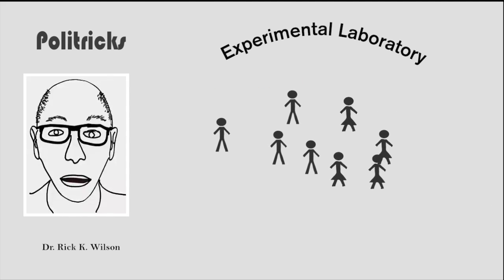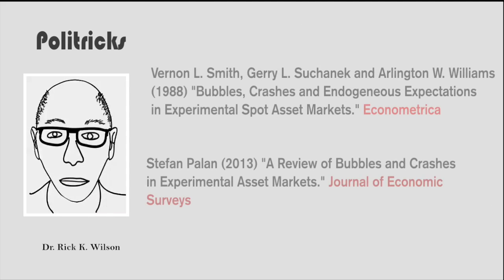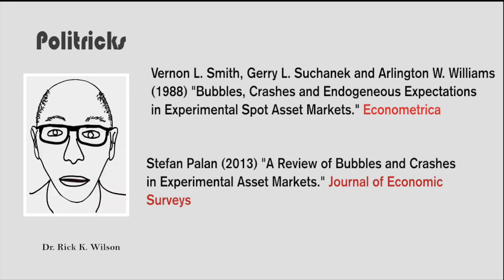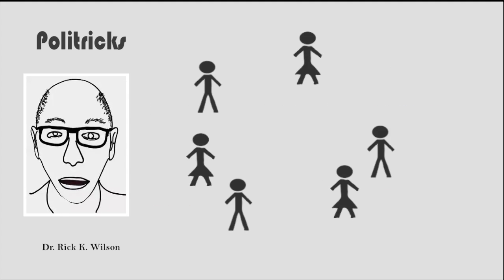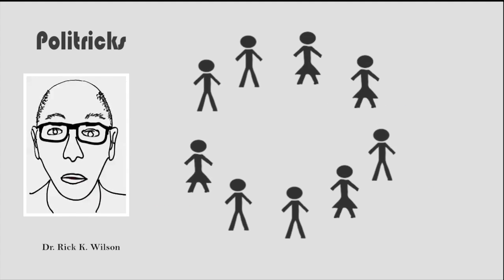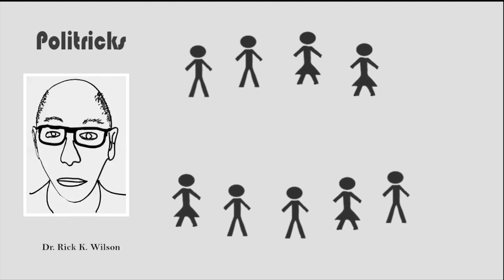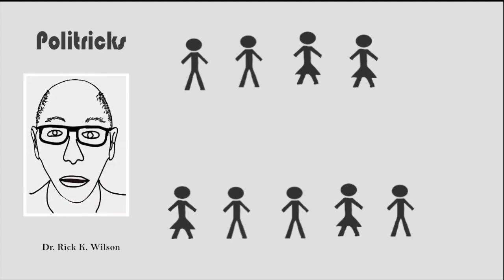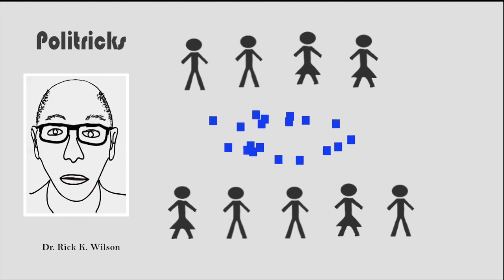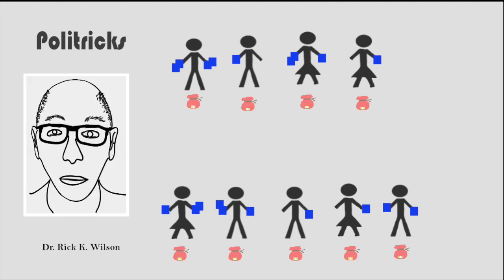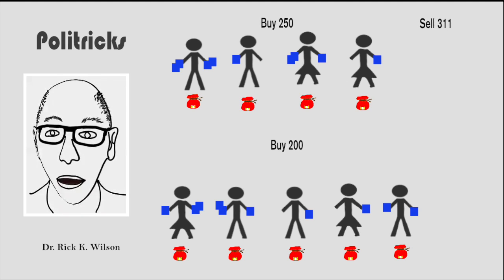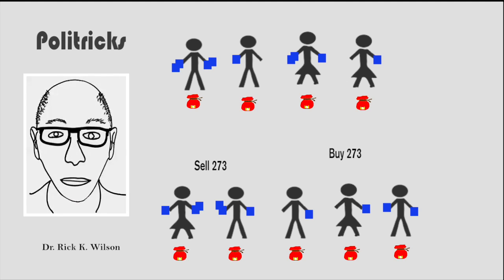Eckel and Fullbrunn test this possibility using an experiment. The experimental setting has been widely used by economists and reliably creates speculative bubbles in the laboratory. Nine subjects participate in 15 trading periods, with each trading period lasting four minutes using an auction. There are 18 shares distributed among the subjects at the outset of the experiment, and subjects are given different amounts of cash with which to participate in the auction. Those who own shares can put them up for sale, and anyone can bid for a share.